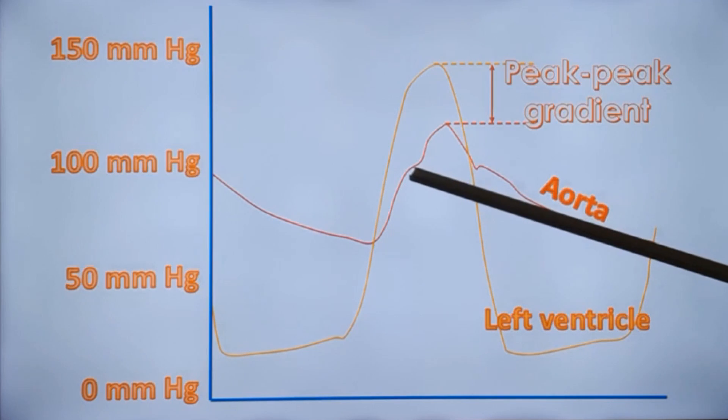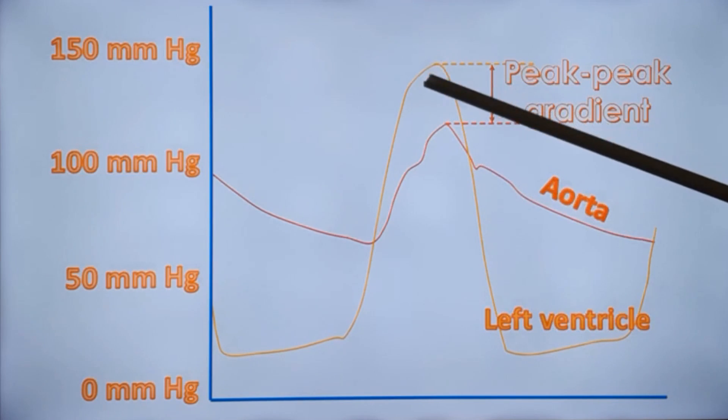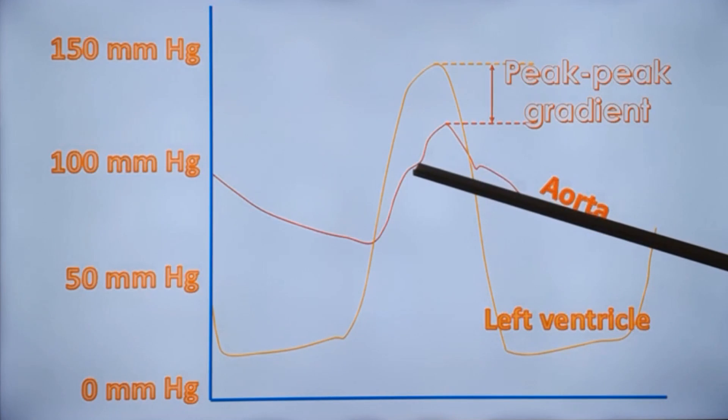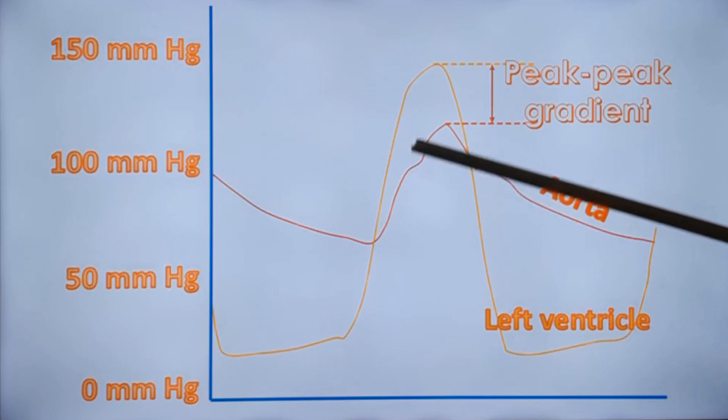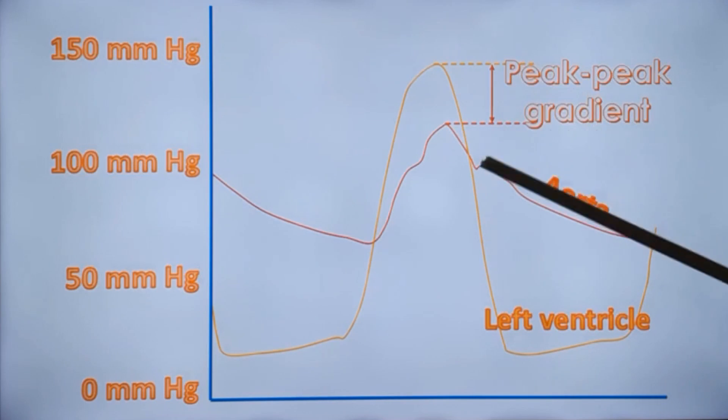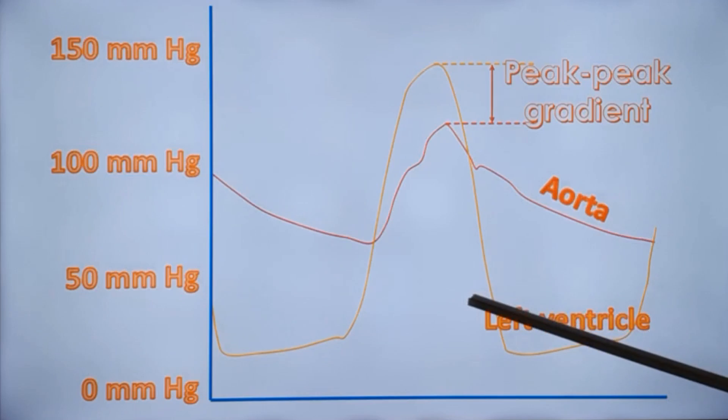Peak instantaneous gradient will be somewhere here because that will be the maximum gradient. So a Doppler recording will show a gradient almost corresponding to this region, which will certainly be higher than the peak-to-peak gradient measured by cardiac catheterization.